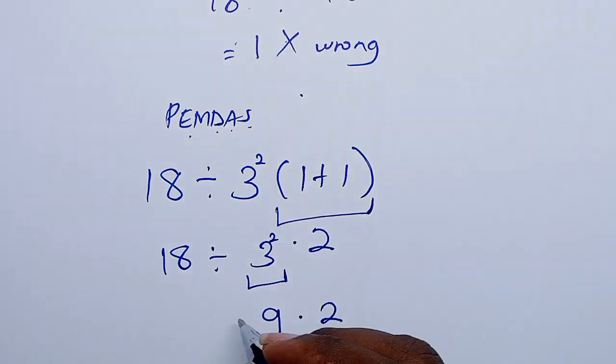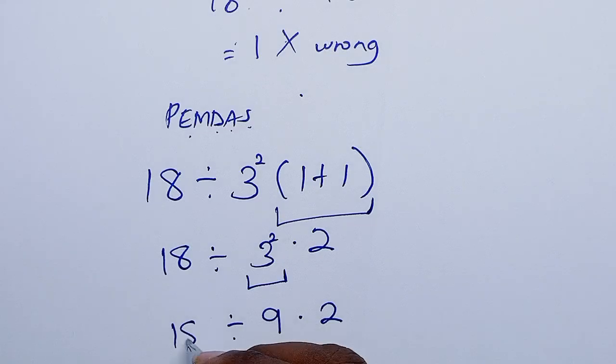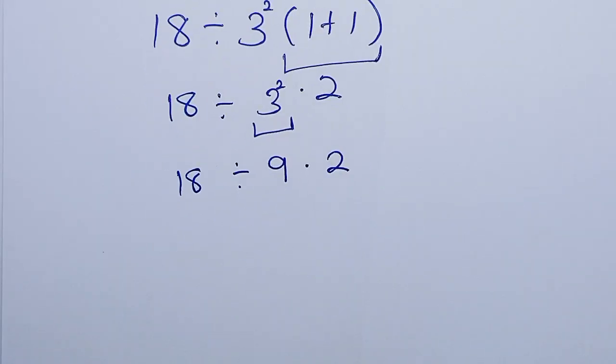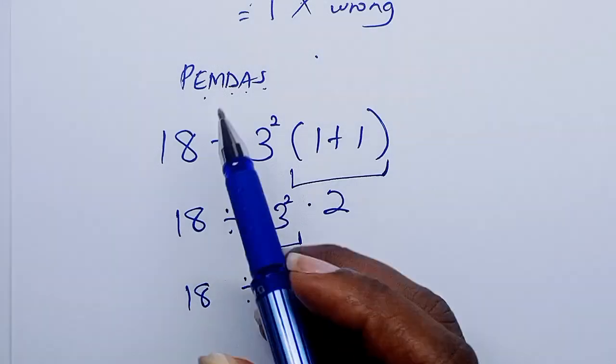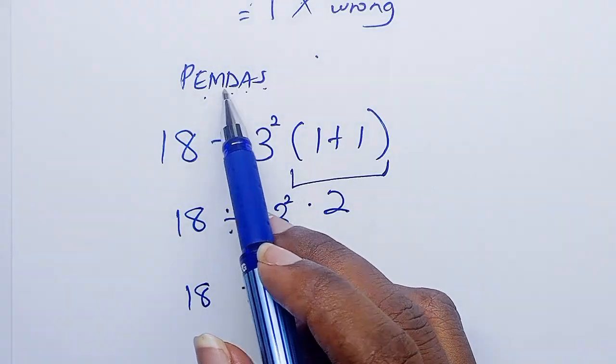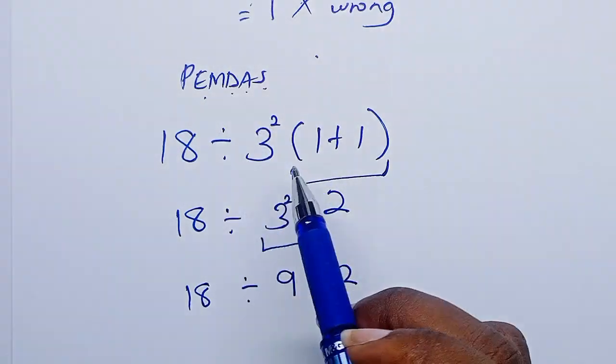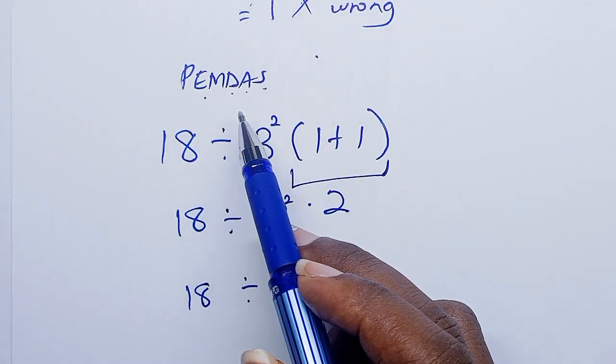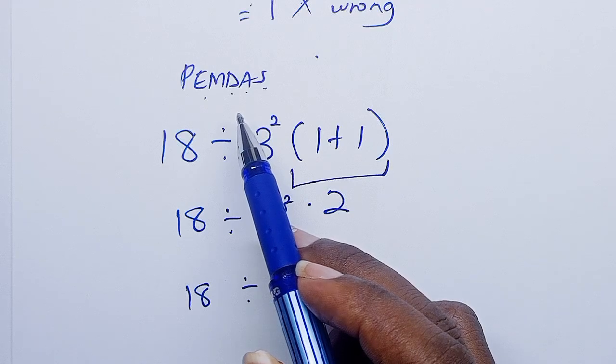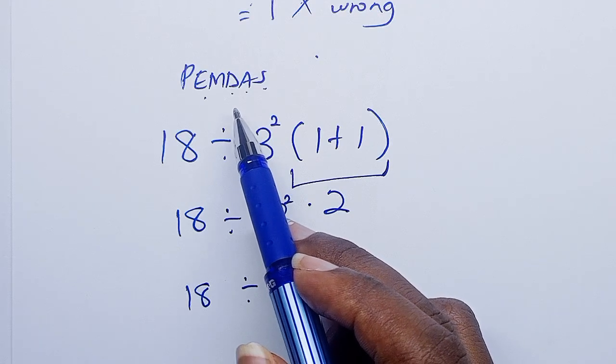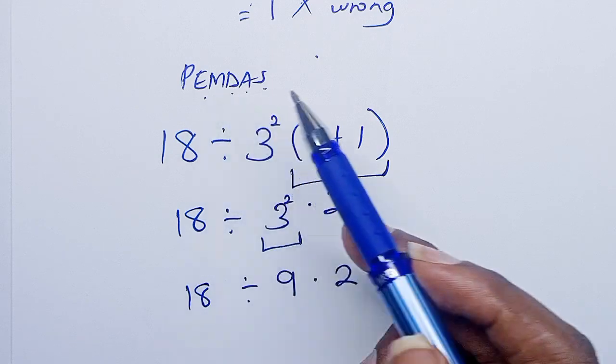So we have 9 times 2, then 18 divided by 3. The next in our PEMDAS is multiplication and division. Now multiplication and division carry the same weight, only that whichever comes first is the one you consider first, and in this case multiplication comes first.